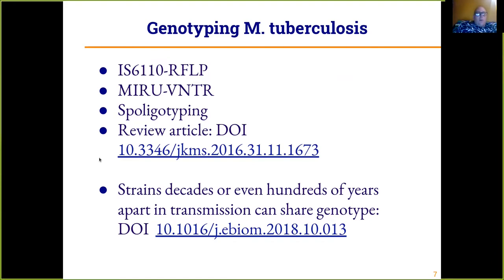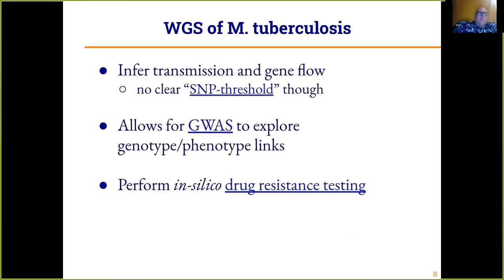There is also spoligotyping, or spacer oligotyping. The direct repeat region has spaces between the direct repeats with a characteristic genomic pattern, and spoligotyping tries to identify a sample of M. tuberculosis using those spacers. However, strains decades or even hundreds of years apart in transmission can share a genotype, so this genotyping is not terribly high resolution.